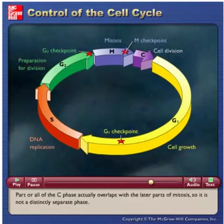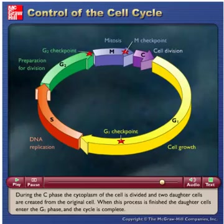Part or all of the C phase actually overlaps with the later parts of mitosis, so it is not a distinctly separate phase. During the C phase, the cytoplasm of the cell is divided and two daughter cells are created from the original cell. When this process is finished, the daughter cells enter the G1 phase and the cycle is complete.